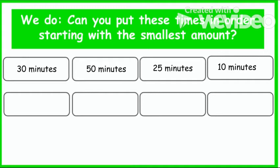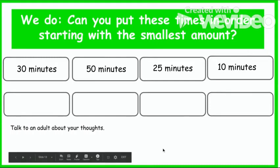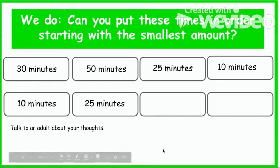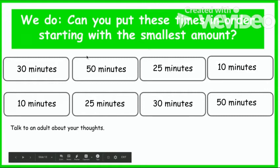Can you put these times in order starting with the smallest amount? We have 30 minutes, 50 minutes, 25 minutes, and 10 minutes. Talk it through with an adult or perhaps your older sibling. The answer is: 10 minutes, 25 minutes, 30 minutes, 50 minutes.